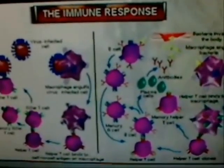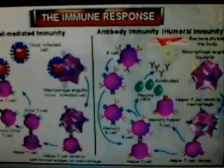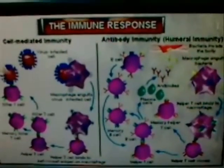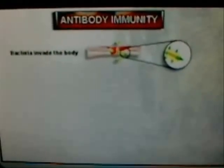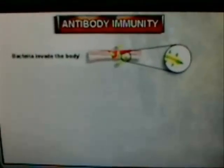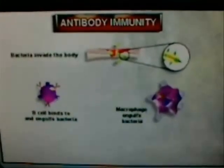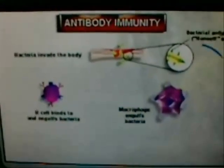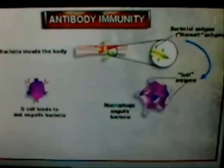In general, there are two kinds of immunity: antibody immunity, which is also called humoral immunity, and cell-mediated immunity. In antibody immunity, when foreign cells or substances such as bacteria invade the body, they are engulfed by macrophages and B cells. The non-self antigens of the bacteria are then pressed into the self-antigens on the surface of the macrophages and B cells' plasma membranes.